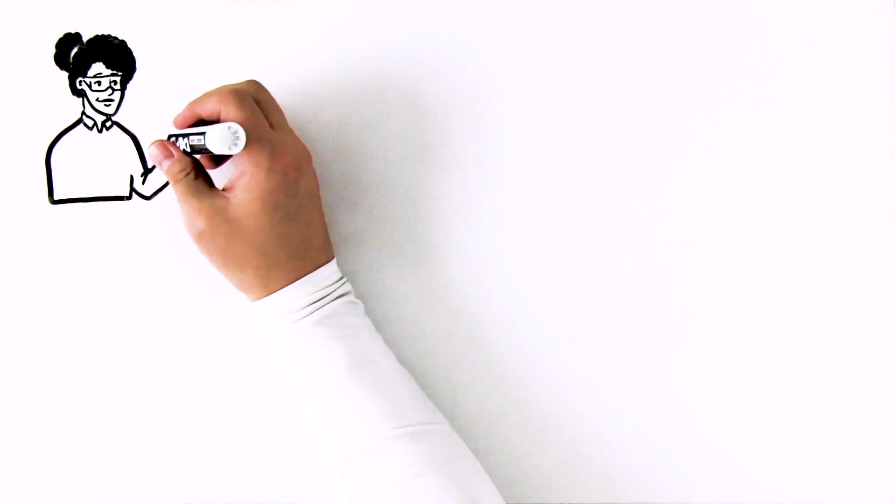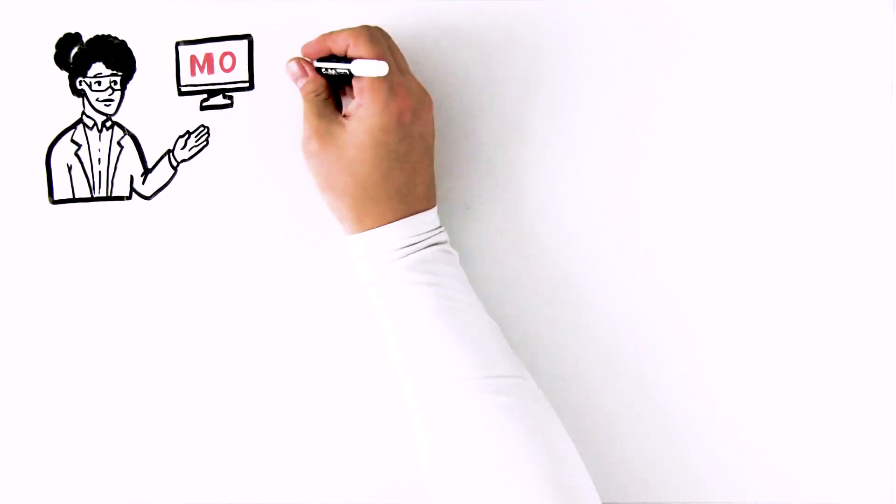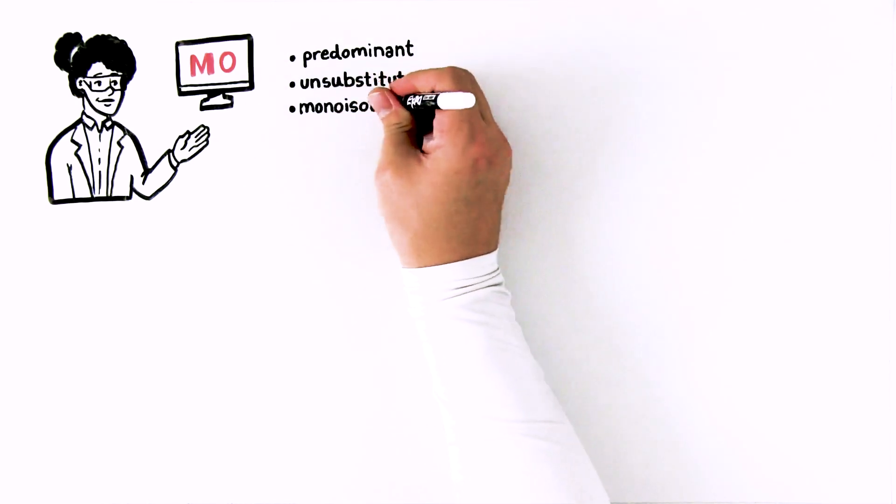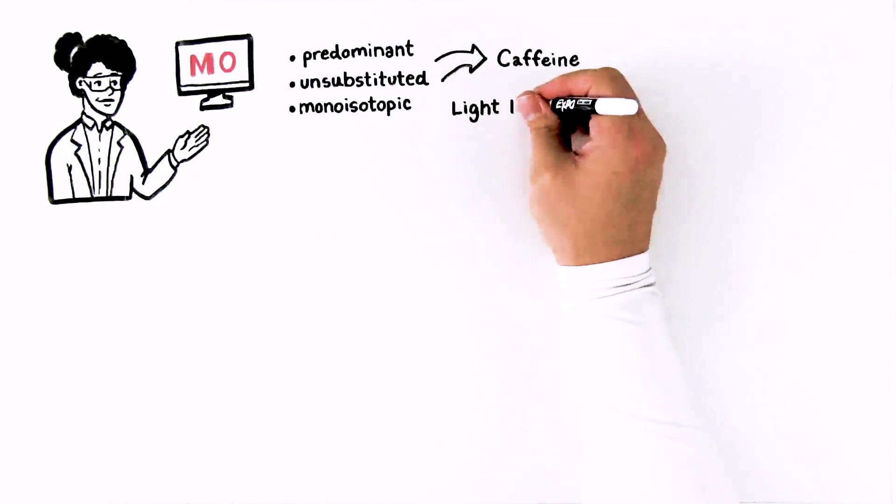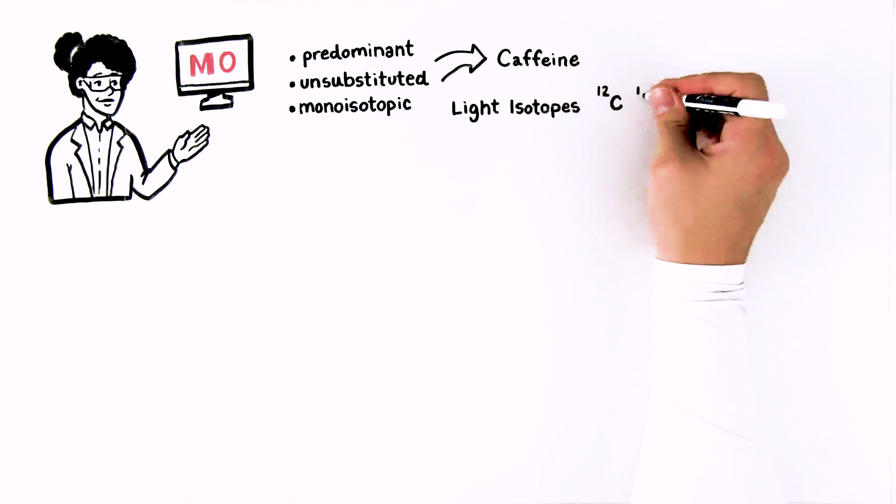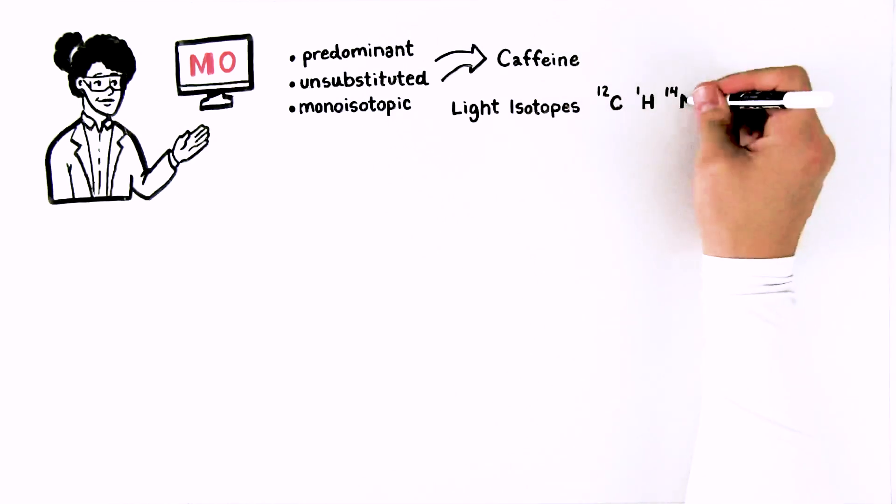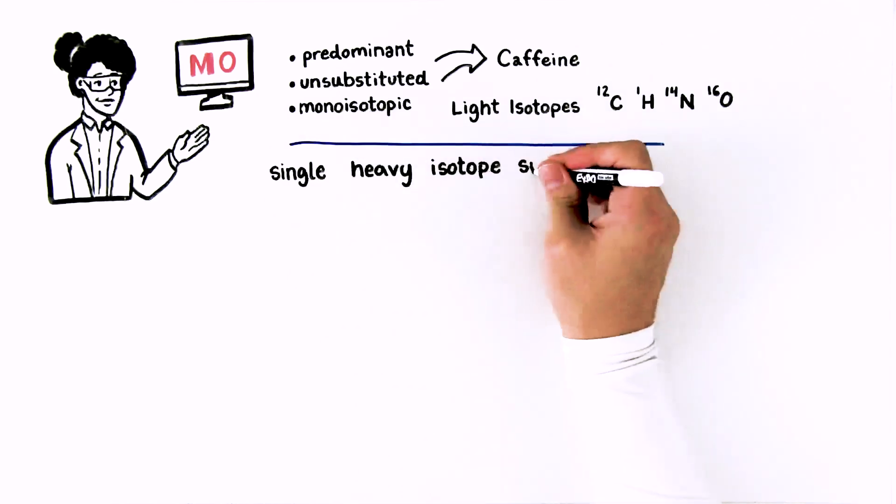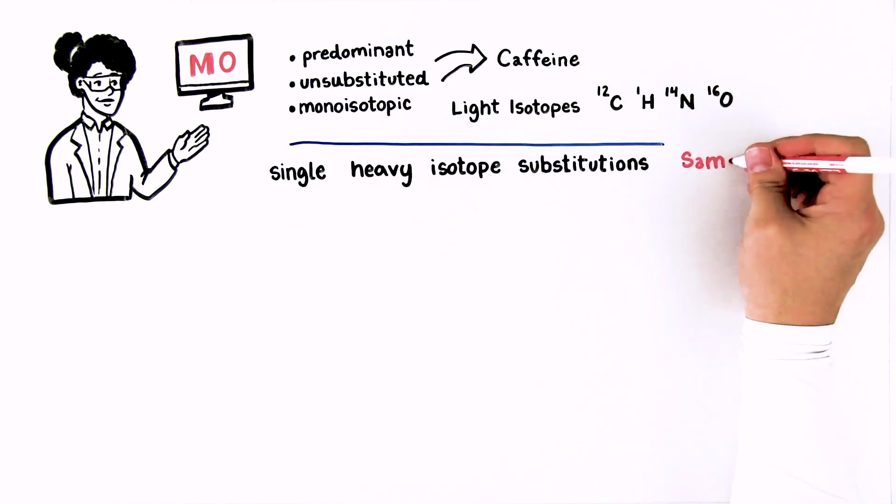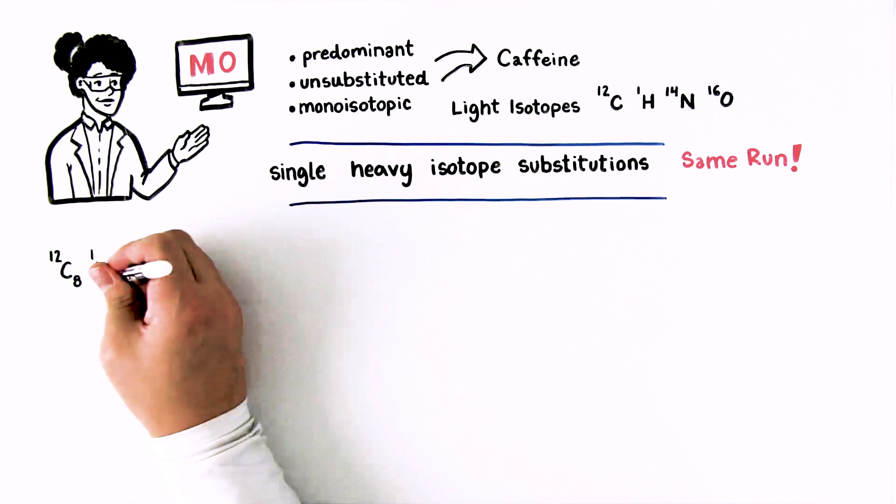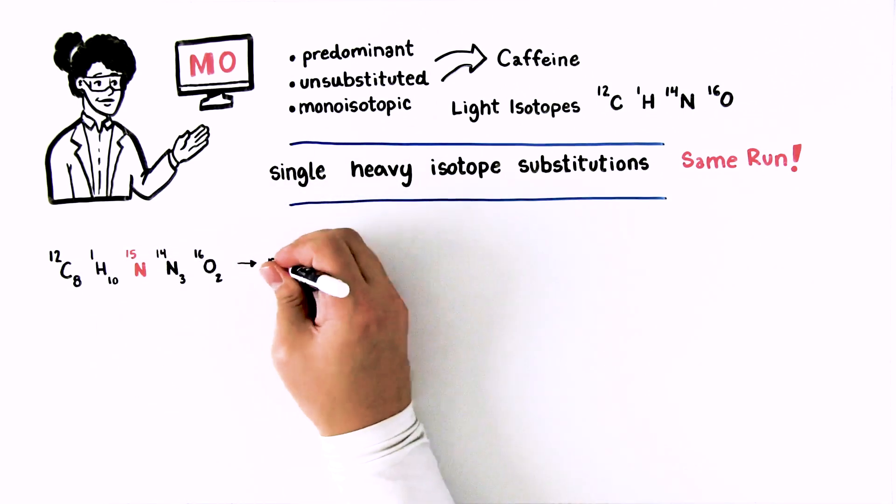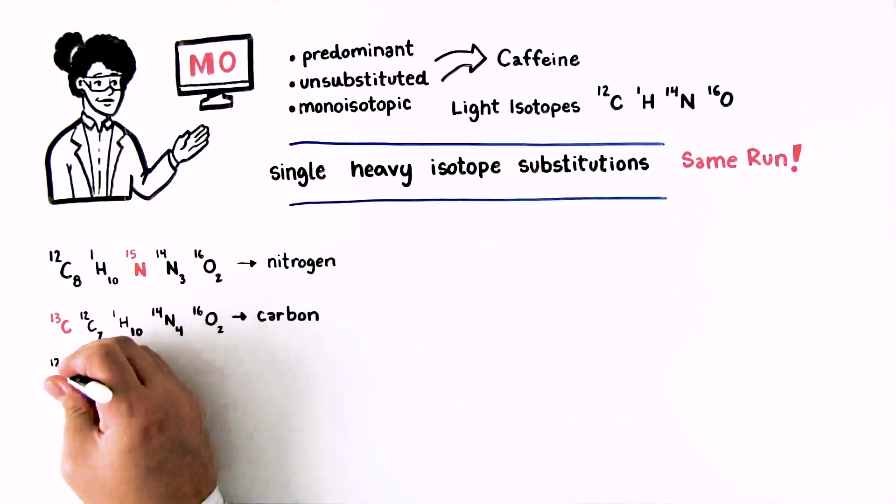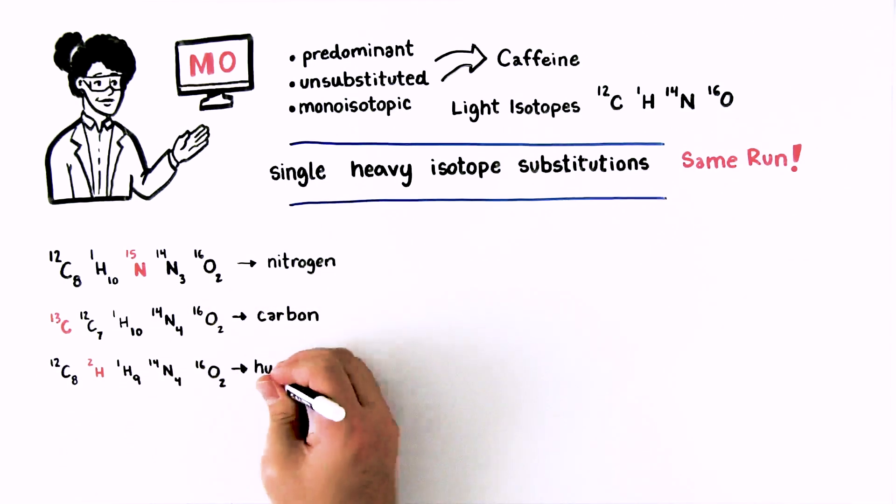So what do the results look like? In the mass spectra, the M0 represents the predominant unsubstituted monoisotopic base peak of caffeine containing only the light isotopes 12C, 1H, 14N, and 16O. Molecular ions with single heavy isotope substitutions are analyzed in the same run. We analyze the 15N substituted caffeine isotopicule for nitrogen, the 13C substitution for carbon, the deuterium substitution for hydrogen, and the 18O substitution for oxygen.